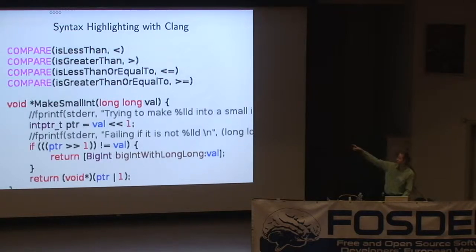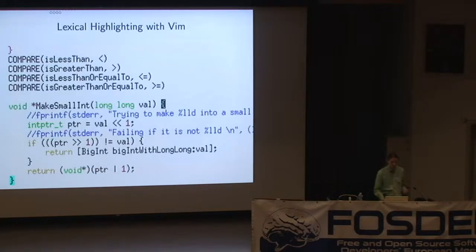For example, this compare thing at the top is a macro, and it knows it's a macro, so it highlights it. It can tell that int pointer t is a typedef. It knows that bigint is a class. It knows that bigint with long-long is a message sent. And if you just compare that with Vim, which does lexical highlighting, which is really simple to implement, it's treating int pointer t as just a magic thing. It's pretending that that's just a language keyword, because it knows that that's defined by C99. But it doesn't know that bigint is a class. It doesn't know that bigint with long-long is a message sent. And it doesn't know that compare is a macro, so it's a shame.